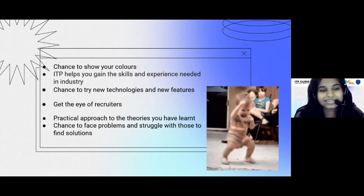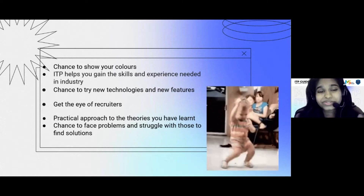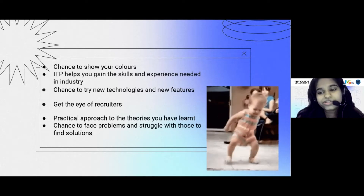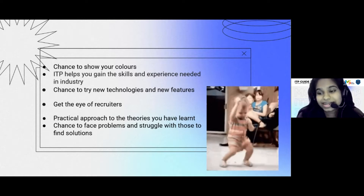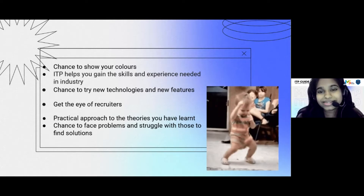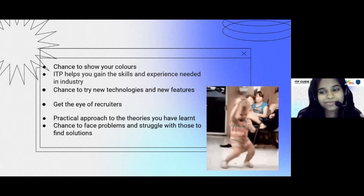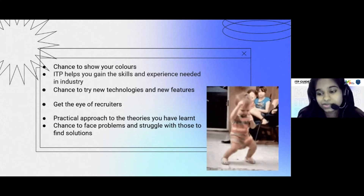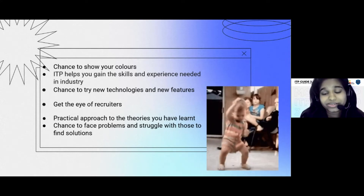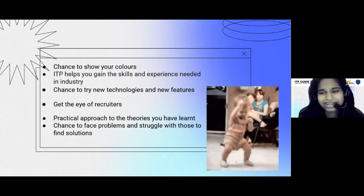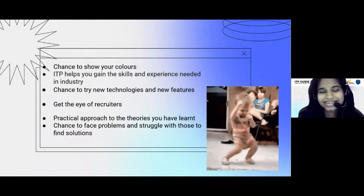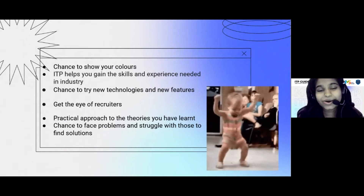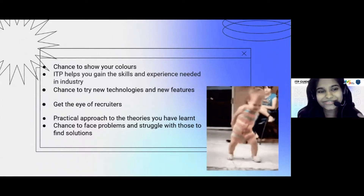Another benefit is you will get a chance to try out new technologies and new features. As you know, you are in second year second semester, and the next two years in 3rd and 4th year will be really busy. So use this six months to improve yourself. Try out new technologies, try modern technologies, try new features in your project. Practice these things because this will be a golden opportunity for you.